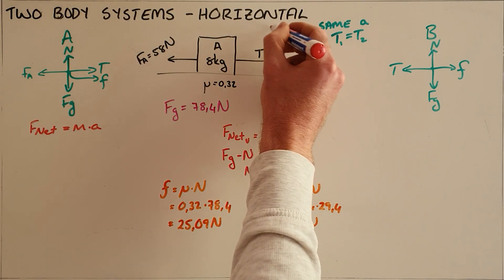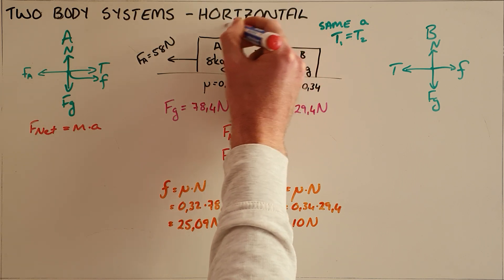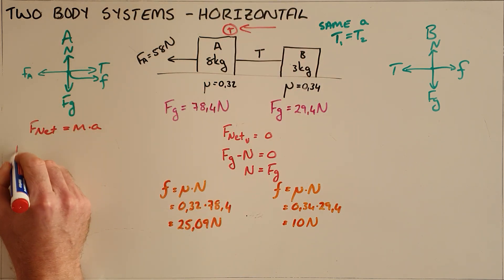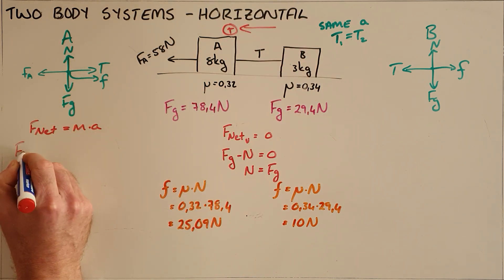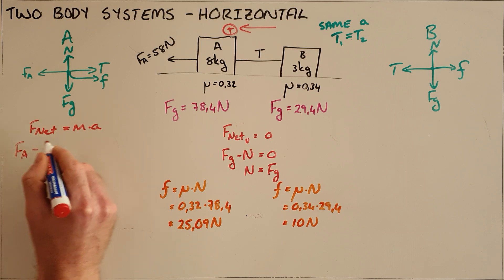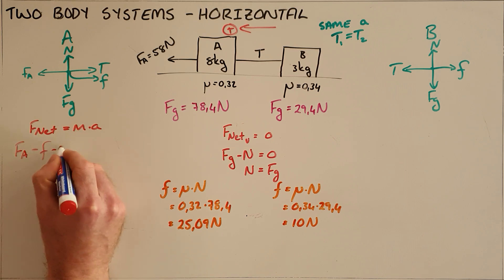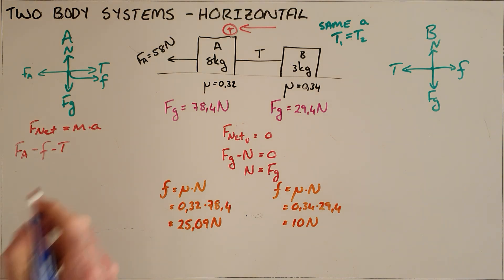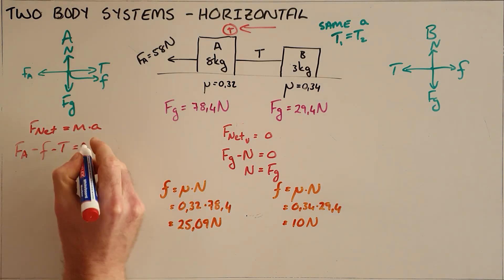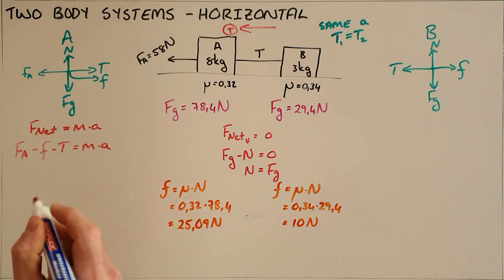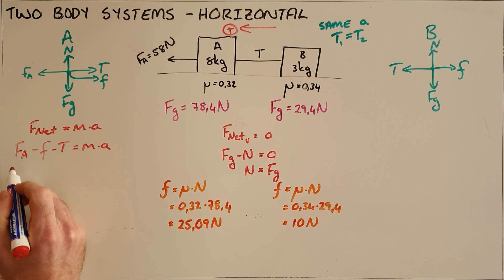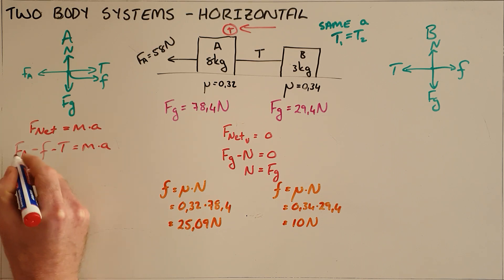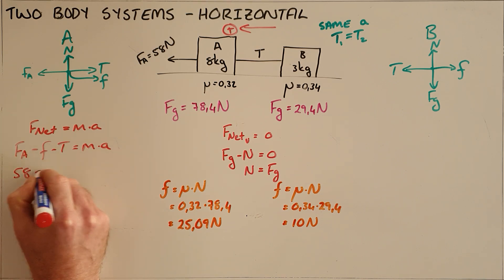Assuming that to the left is our positive direction, the net force is the applied force to the left minus the frictional force and the tension force acting to the right, and that is equal to the mass of object A multiplied by its acceleration. I can substitute in the values: the applied force is 58 Newtons.